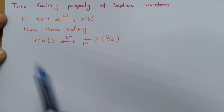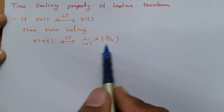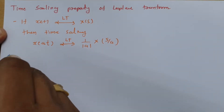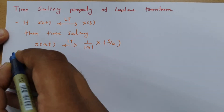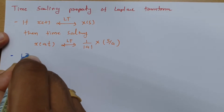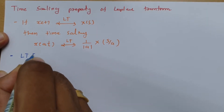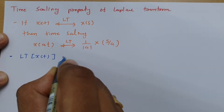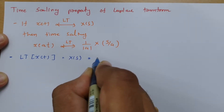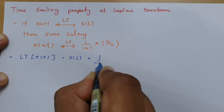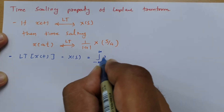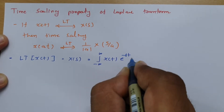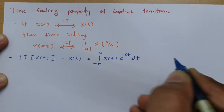So let us try to derive this property. As we know, the Laplace transform of signal x(t) is X(s), and that is the integral from minus infinity to infinity of x(t) · e to the power minus s·t dt.